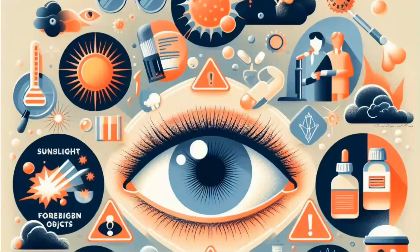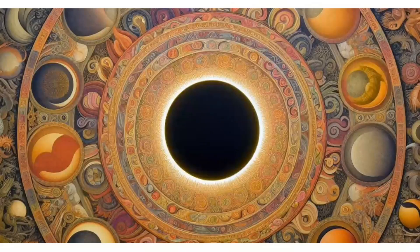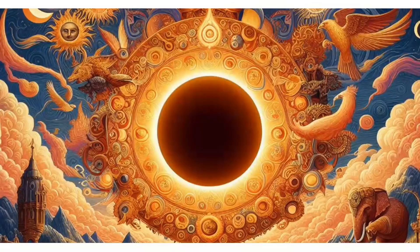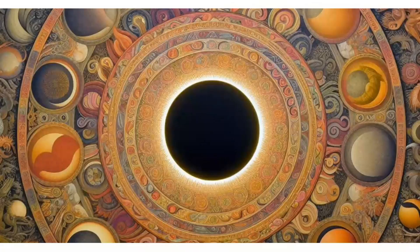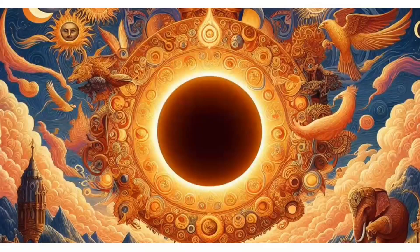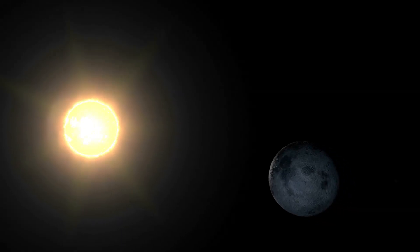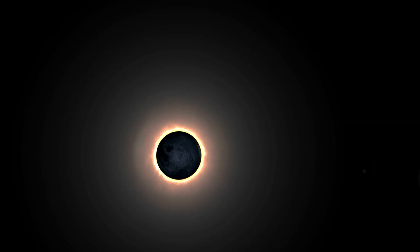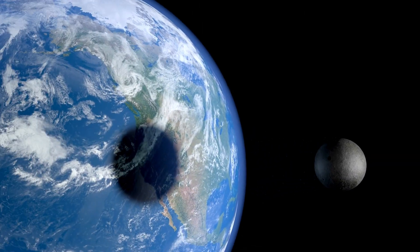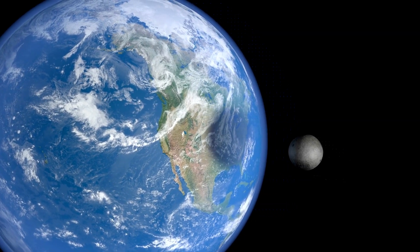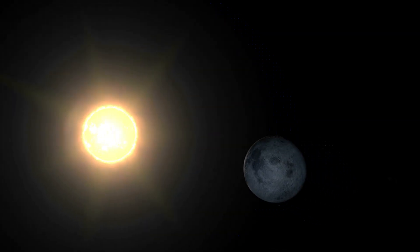Throughout history, solar eclipses have been imbued with cultural and symbolic significance. Ancient civilizations often interpreted eclipses as omens or celestial messages, shaping religious beliefs and societal practices. The ability to predict eclipses, which began in China around the fourth century BC, has now advanced to a level where future eclipses can be accurately forecasted centuries ahead, with profound implications for astronomy, navigation, and cultural events.